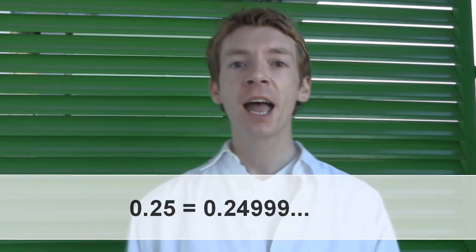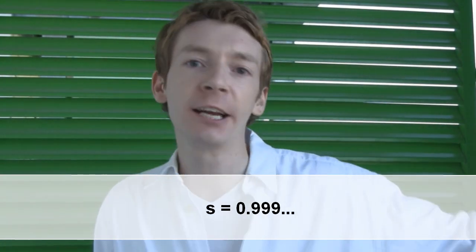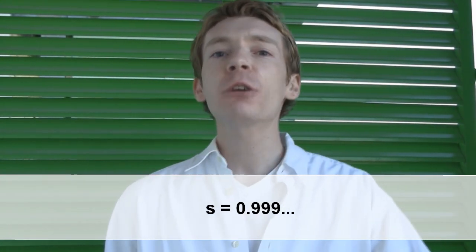And obviously we prefer the short version. You can show this—there's a quick way to do it if you want. You could say s equals 0.999 recurring, and then say, oh, times it by 10,